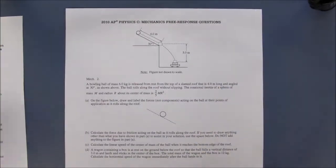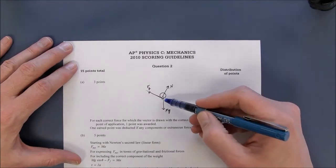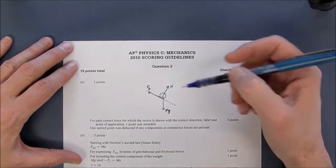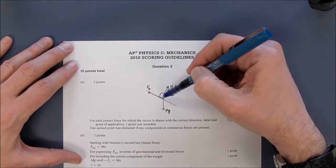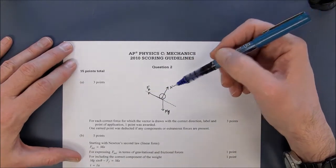The first was label the forces and the AP answer is the normal force, of course, is from the contact of the table, mg is from the center of mass, and the force of friction is from the contact of the table up the inclined plane.